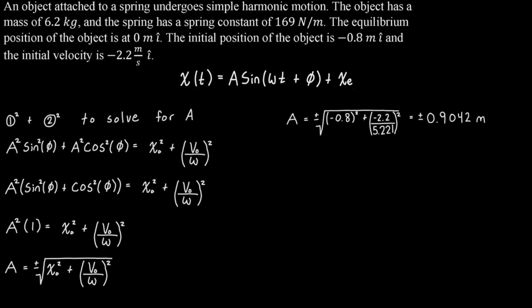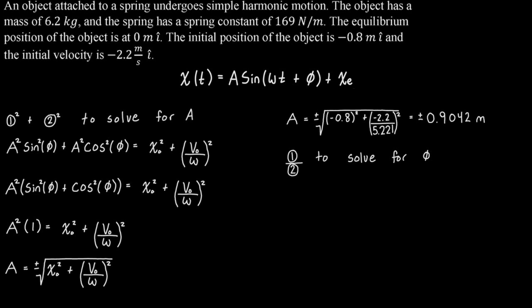Plugging in our numbers, we get that the amplitude is plus or minus 0.9042 meters. We'll leave it like that for now and solve for the phase shift. For the phase shift, the thing to keep in mind is that sine divided by cosine equals tangent. So we can take equation 1 and divide it by equation 2 to solve for the phase shift. On the left-hand side we get the initial position divided by the initial velocity over the angular frequency, and on the right-hand side we get A sine(φ) over A cosine(φ).